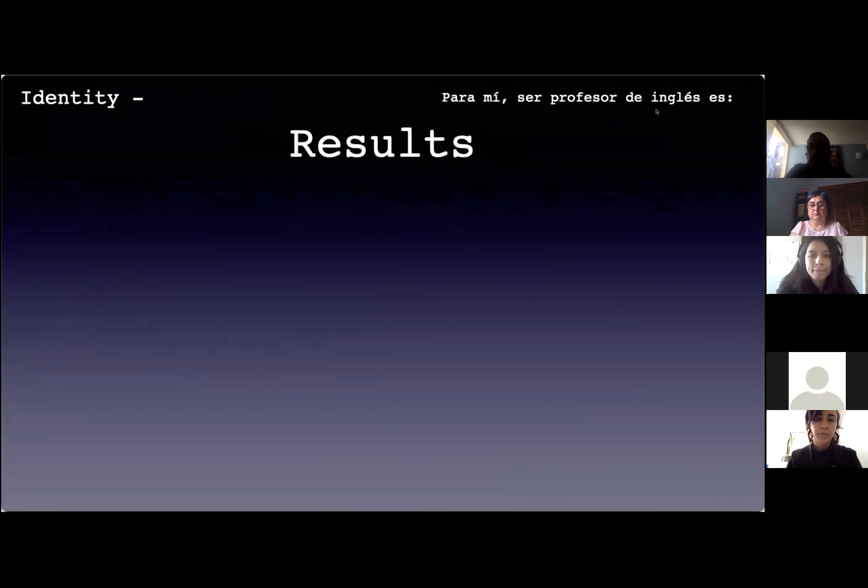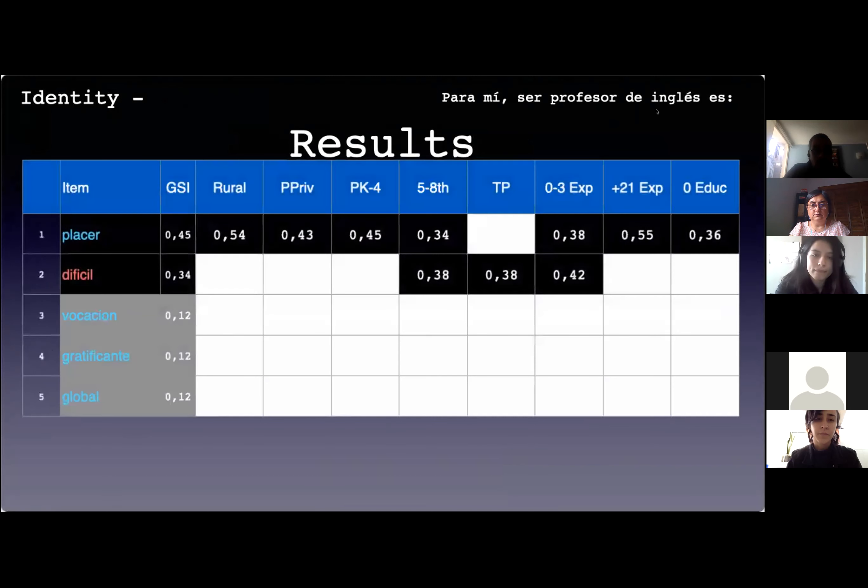Let us look at the results. First, let's examine how the social representation of learning English looks like from an identity perspective when they completed the statement 'For me, ser profesor de inglés es.' In the black boxes, you will see those items with a high salience index representing the central kernel area of the social representation. Looking at the index for the population in the third column, we see that from the point of view of the identity of these EFL teachers, the main item is PLACER, followed by a contrasted item DIFÍCIL. In the gray boxes below are items located further away from the central kernel: vocación, gratificante, and global.